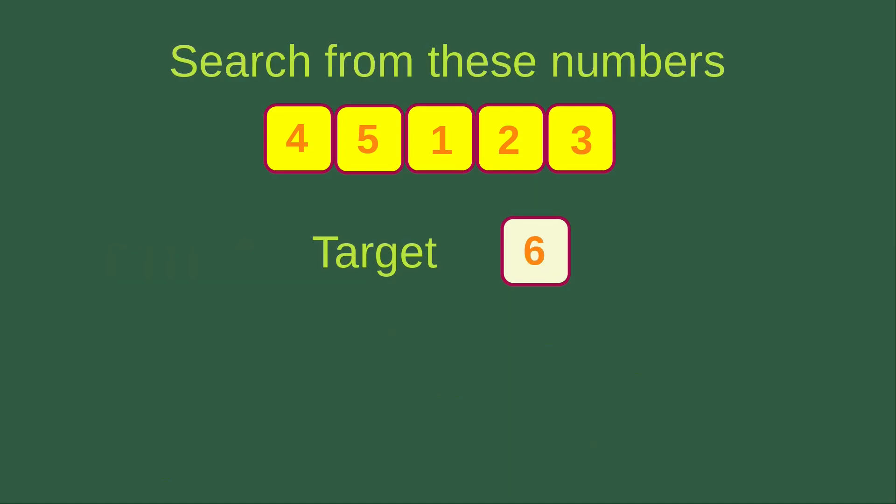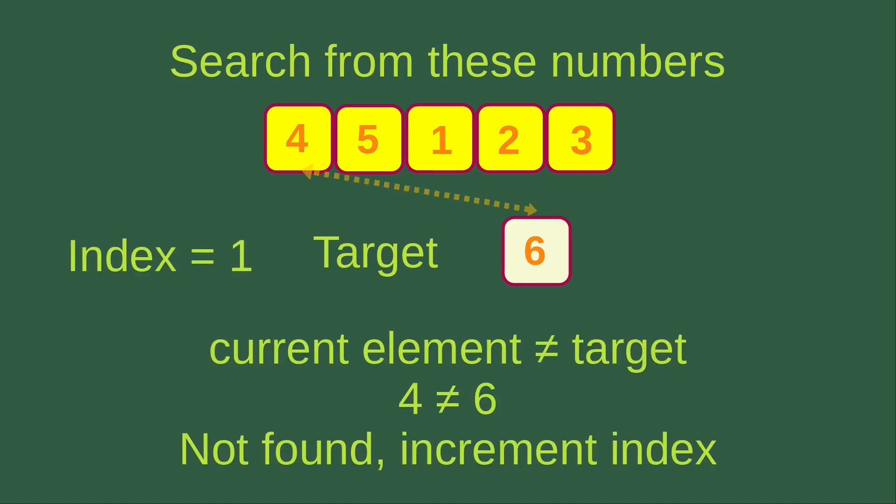Let us see another example. How about finding six from the list of these five numbers? We start with index one. The current element, four, is not equal to the target, six, so the target is not found. We increment the index to two. The current element is five, but the target is six, so they are not equal — the target is not found.